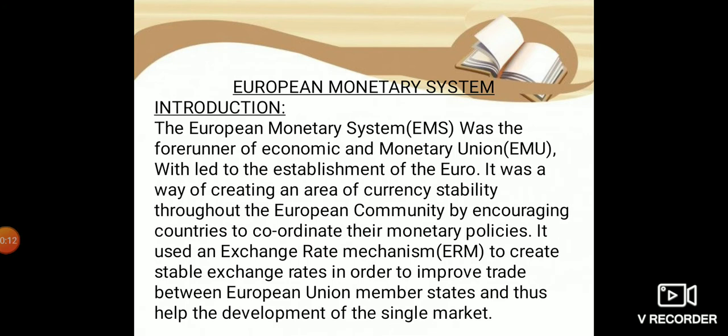Introduction: The European Monetary System was the forerunner of Economic and Monetary Union which led to the establishment of the euro. It was a way of creating an area of currency stability throughout the European community by encouraging countries to coordinate their monetary policies. It used the exchange rate mechanism to create stable exchange rates in order to improve trade between European Union member states and help the development of the single market.